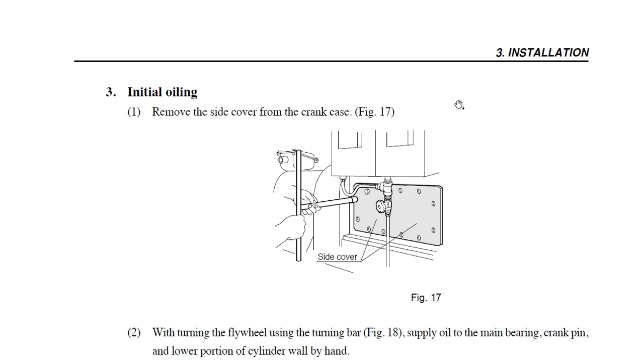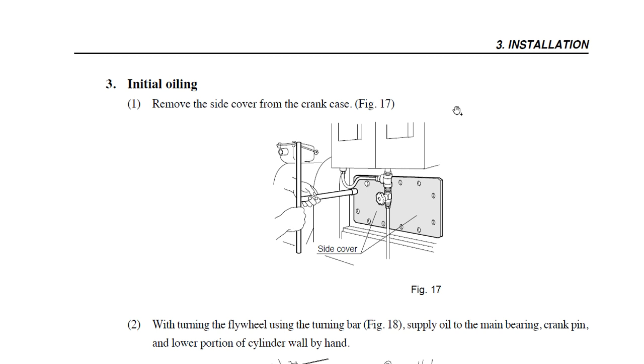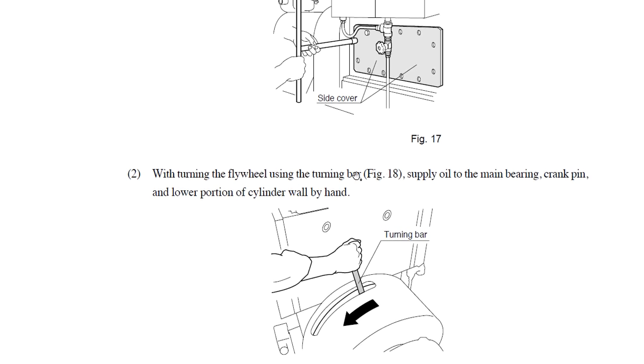Today, as you can see on this page, we will discuss the initial oiling. When we fill the oil, we remove the side cover from the crankcase. We turn with a turning bar, and oil is supplied to the main bearing, crankpin, and lower portion of the cylinder wall by hand.